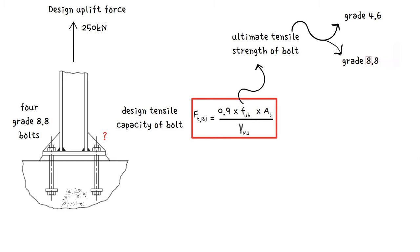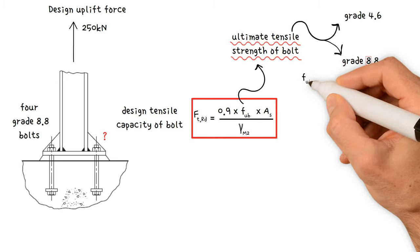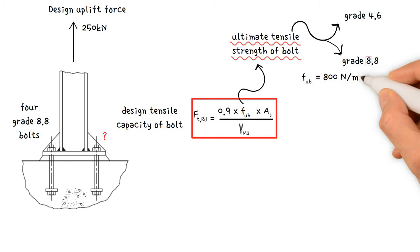The first number refers to the ultimate tensile strength of the bolt and the second number gives a multiplier to get the yield stress. For example, a grade 8.8 bolt has an ultimate tensile strength of 800 N per millimeter squared, and a yield stress of 800 times 0.8, which equals 640 N per millimeter squared.